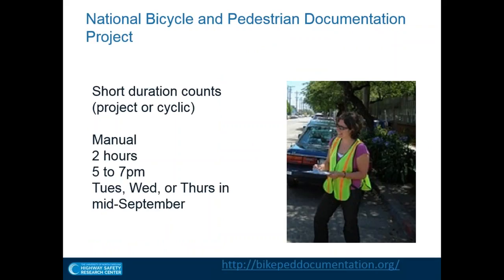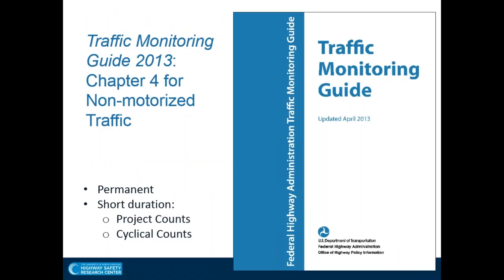Looking at the original National Bike-Ped Documentation Project, the focus was on two-hour counts on Tuesday, Wednesday, Thursday, and sometimes weekends in mid-September. In 2013, the Traffic Monitoring Guide revision included a chapter specifically for non-motorized traffic, discussing permanent and short duration counts for biking and walking. It was updated in 2016 with a new revision to Chapter 4 and Chapter 7 that includes the format for entering bicycle and pedestrian data into the Travel Monitoring Analysis System (TMAS). Jeremy and Kelly will talk about that later.